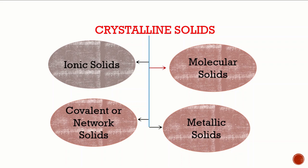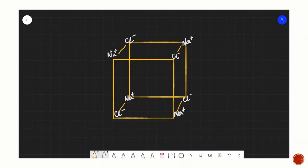In ionic solids, the constituent particles are positive and negative ions. These ions are held together by strong Coulombic, that is electrostatic, forces of attraction. Because of these strong electrostatic forces, they have high melting and boiling points. They are electrical insulators in the solid state because their ions are not free to move about.